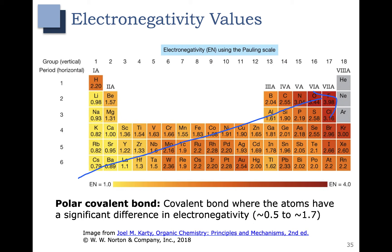Let's check out a carbon-oxygen bond. Oxygen has an electronegativity value of 3.44. Carbon has an electronegativity value of 2.55. That gives us a difference of 0.89, which falls in the polar covalent range. So a carbon-oxygen bond would be considered polar covalent.